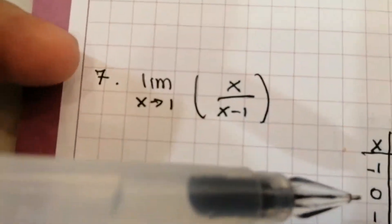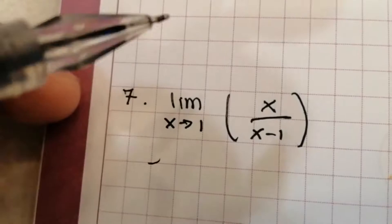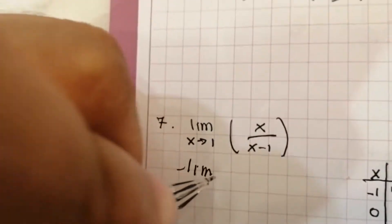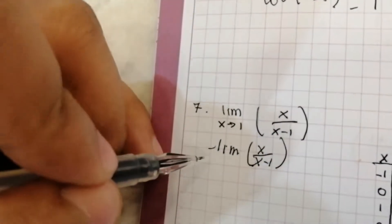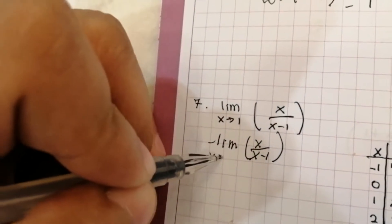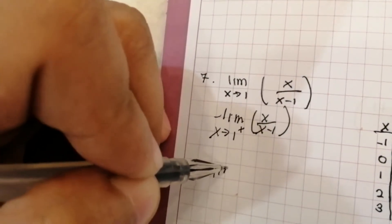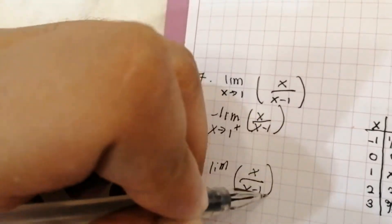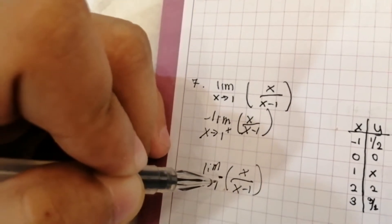To answer that, we will now have two different answers. One is for the limit of x over x minus 1 as x approaches 1 from the positive side, and on the other side, the limit of x over x minus 1 as x approaches 1 from the negative side.